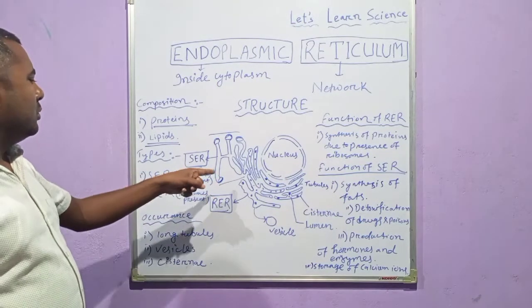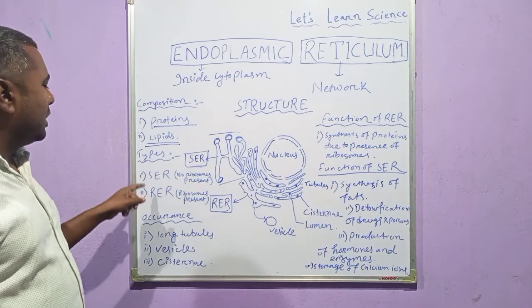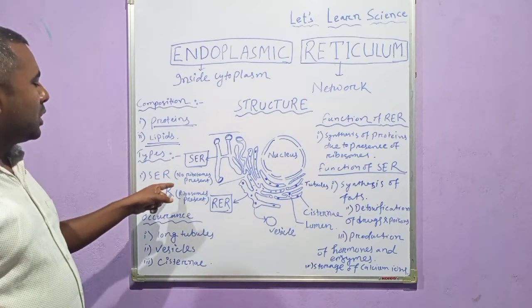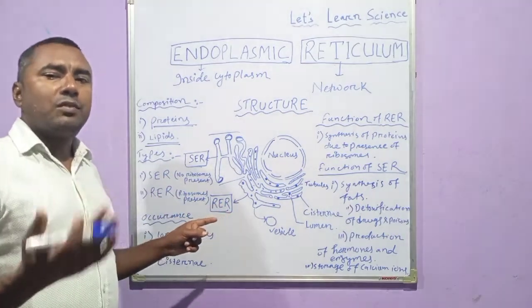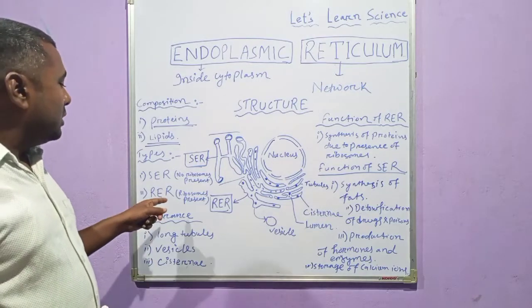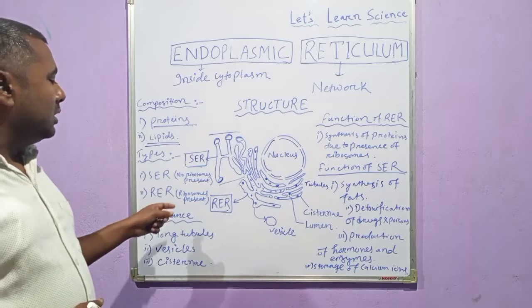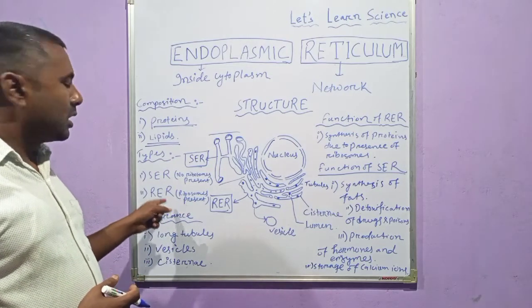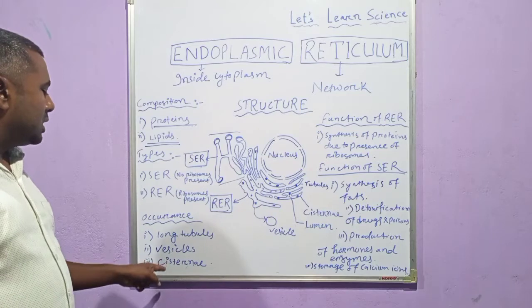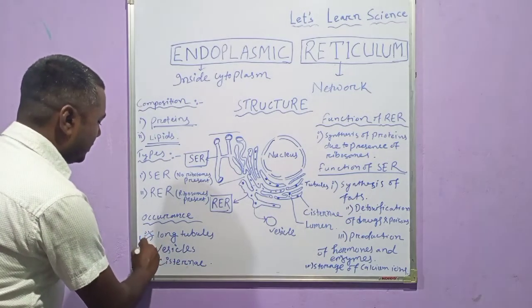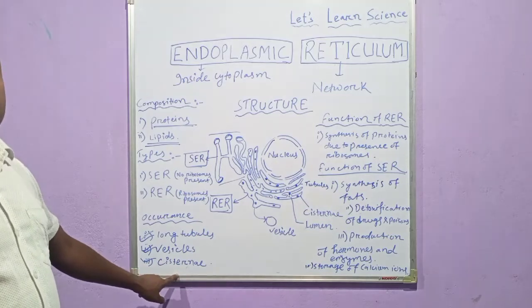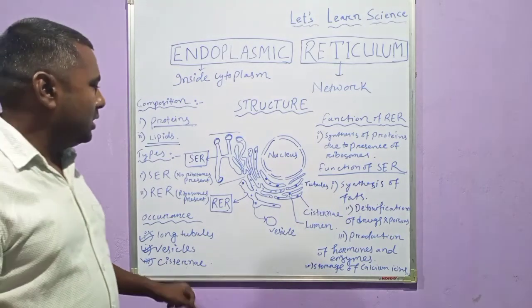We have already come to know about the two types of endoplasmic reticulum. First is SER, the Smooth Endoplasmic Reticulum — it is called smooth because no ribosomes are present on its surface. Second is RER, the Rough Endoplasmic Reticulum — ribosomes are found on its surface, which is why it is called rough. As mentioned, it occurs in three forms.